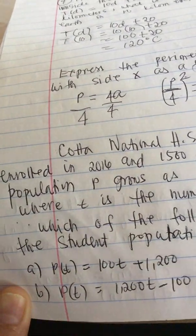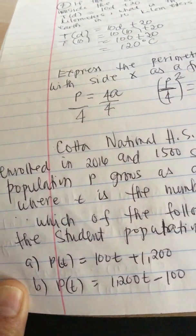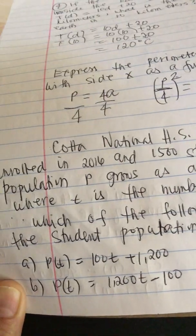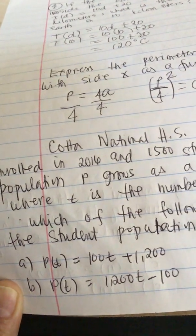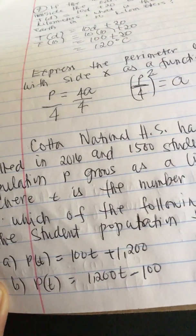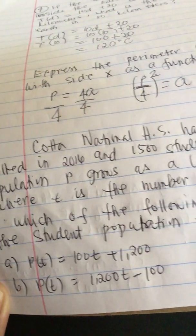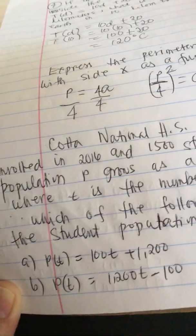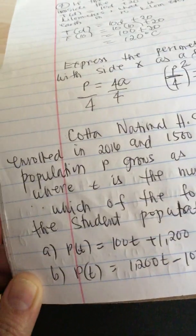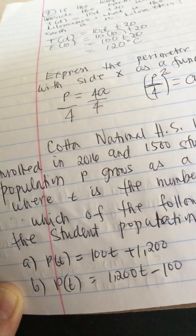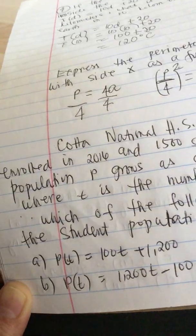p(t), the answer is A, because 100 is added every year. t is the number of years after 2016, plus the original population in 2016, which is 1200. So the answer to this problem is letter A.